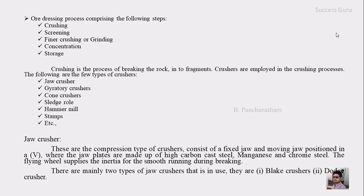We will see the first one — the jaw crusher. These are the compression type of crusher and consist of a fixed jaw and a movable jaw, positioned to form a V-shape. The jaw plates are made up of high carbon cast steel and manganese and chrome steel, which makes the plates much stronger and harder. The flywheel supplies the inertia for smooth running of the machine. There are mainly two types of jaw crushers: the Blake crusher and the Dodge crusher.